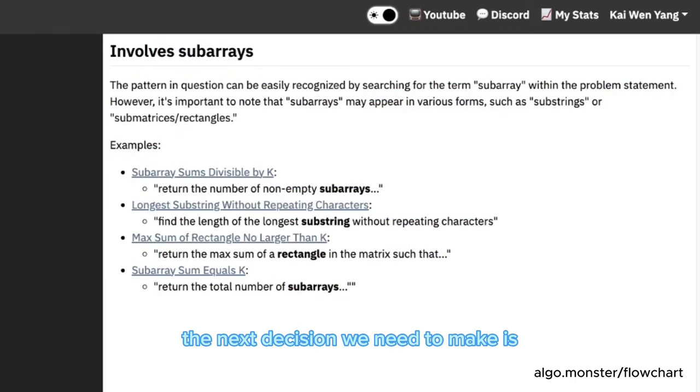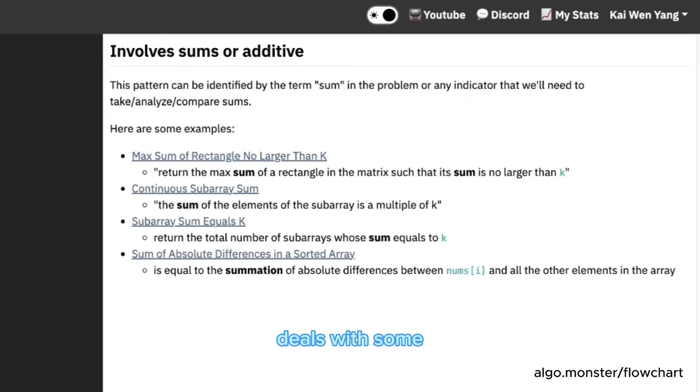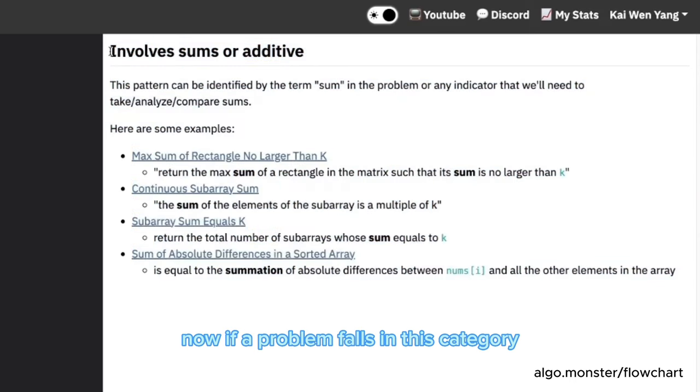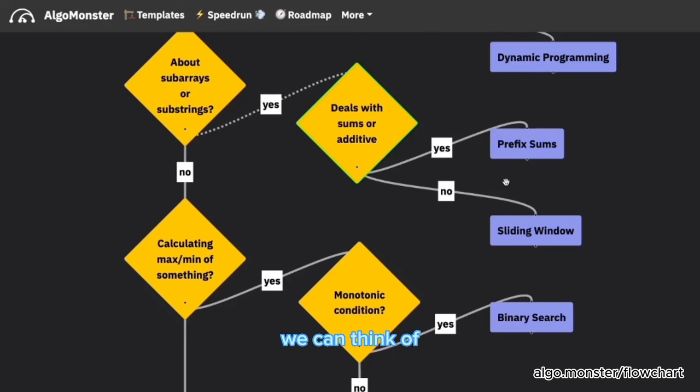Right. And the next decision we need to make is deals with sum or additives. What does this mean? To figure out whether a problem should be in this category, we should look at the problem statement and look for the keyword sum. For example, here, they want max sum of a rectangle, they want sum of elements, here's summation. Here's the keyword sum in the problem, we would put it in this category. Now if a problem falls in this category, we can think of prefix sums.